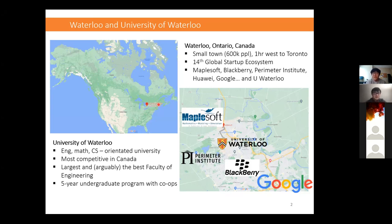In this very small town, we have some great places like Maplesoft. If you work in mathematics, physics, and engineering, you know Mathematica and Maple — dominant computational software. We have Blackberry; it was a very dominant phone company, but now it's a data security company. We also have the Perimeter Institute, one of the best theoretical physics places. And we have Huawei and Google headquarters nearby. And most importantly, we have the University of Waterloo.